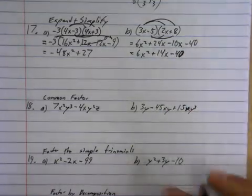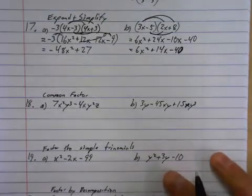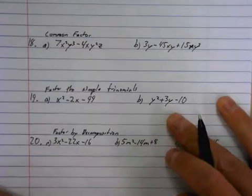Make sure your zeros don't look like sixes. Okay. Done. Expand and simplify. Okay, next one.